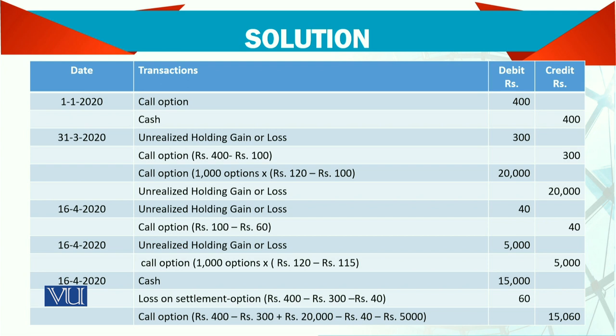After that, you will go to April 16 — one transaction will be reduced and Rs. 100 will be reduced. So your Rs. 60 will be reduced because the price will be reduced. The price of your option will be reduced. When you are going to buy at this price — your Rs. 120 is now Rs. 115 — you have lost again Rs. 5,000.